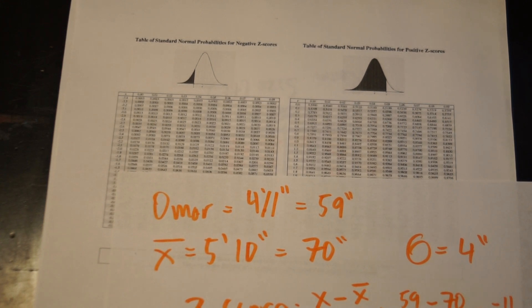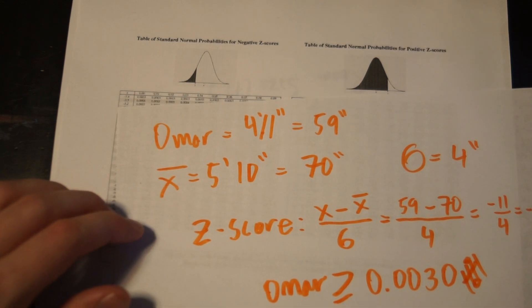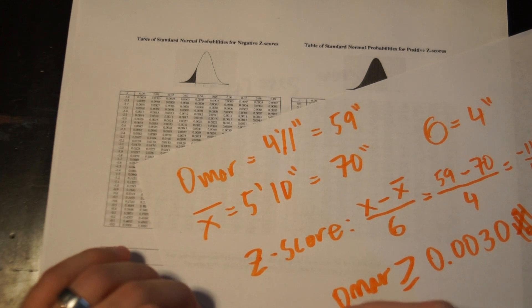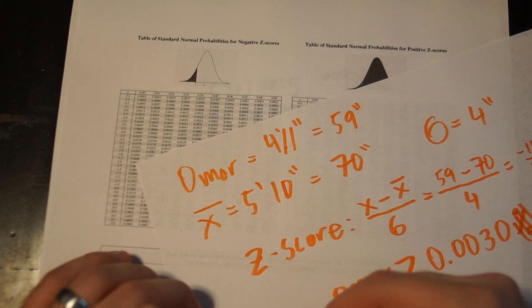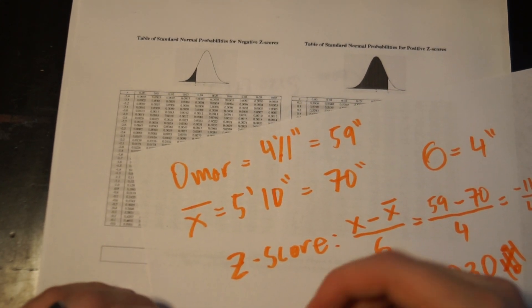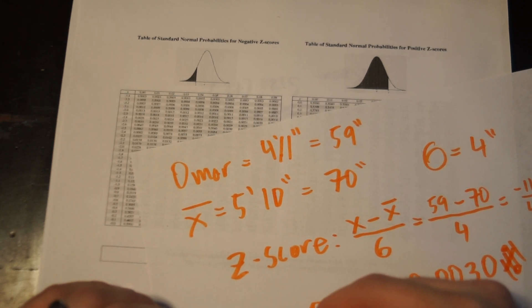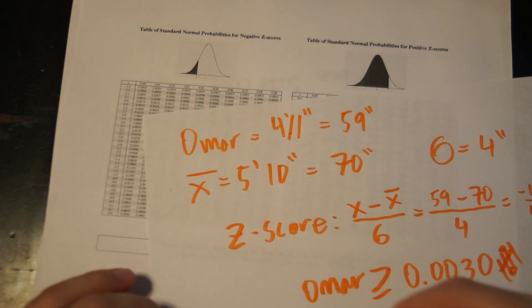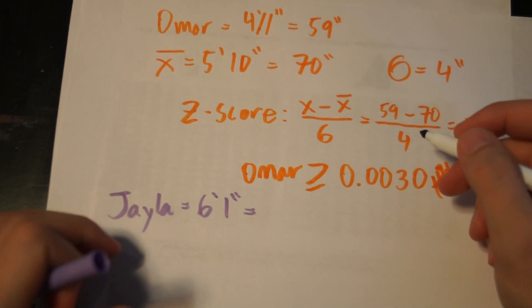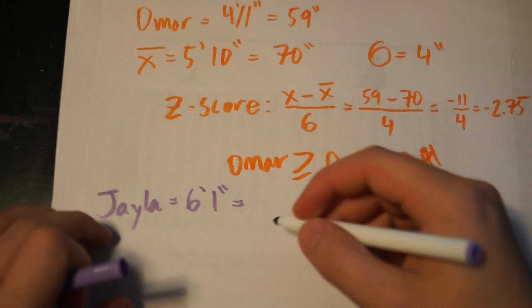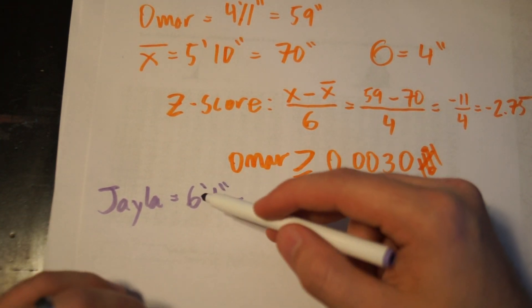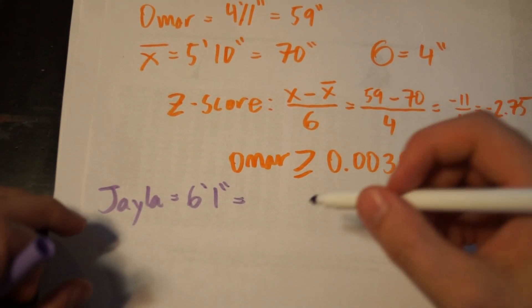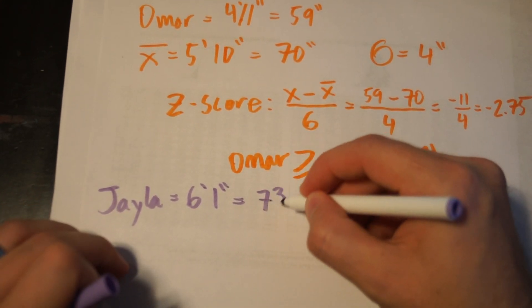Let's do another example with a positive z-score. Let's use Jayla. I've decided that Jayla is, I don't know, 6 feet 1 inches. Now, let's convert that to inches, so 6 times 12 is 72, plus 1 is 73 inches.